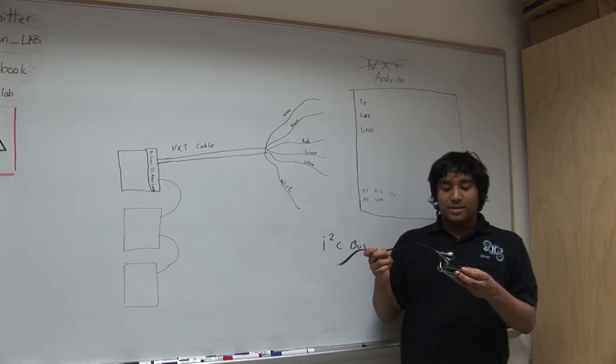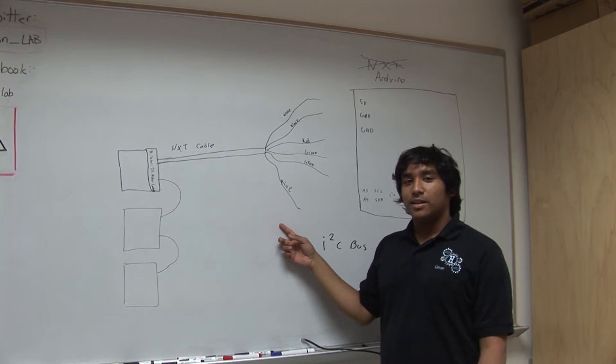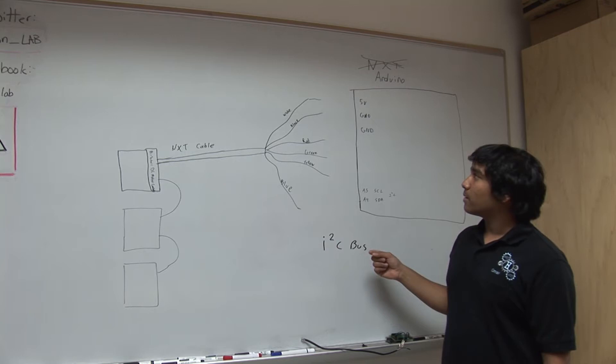Now I'm going to show you how to make the cable that connects from the Arduino to the motor controller. Right here we have our Arduino, which replaces the NXT. You're going to want to start off by cutting the NXT cable, and this should expose six colored wires.